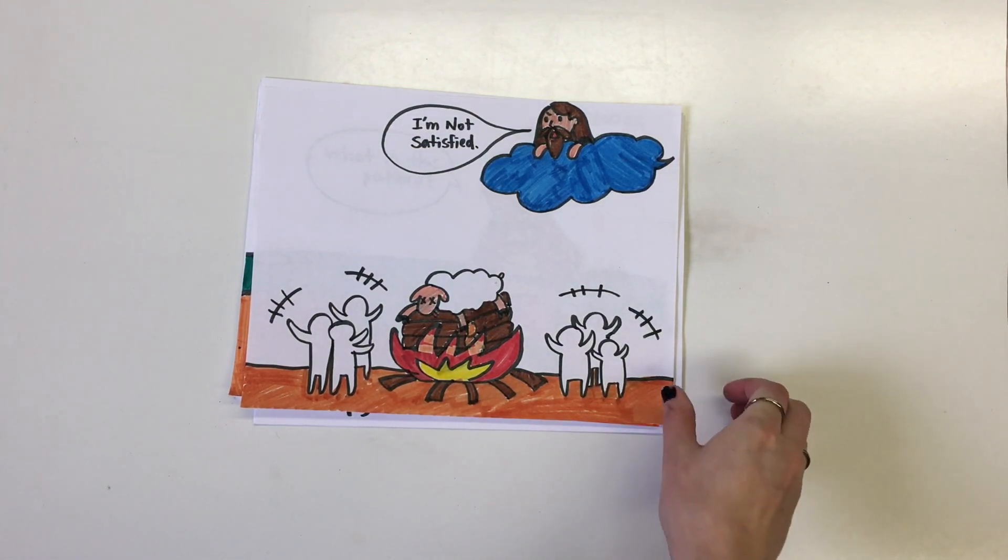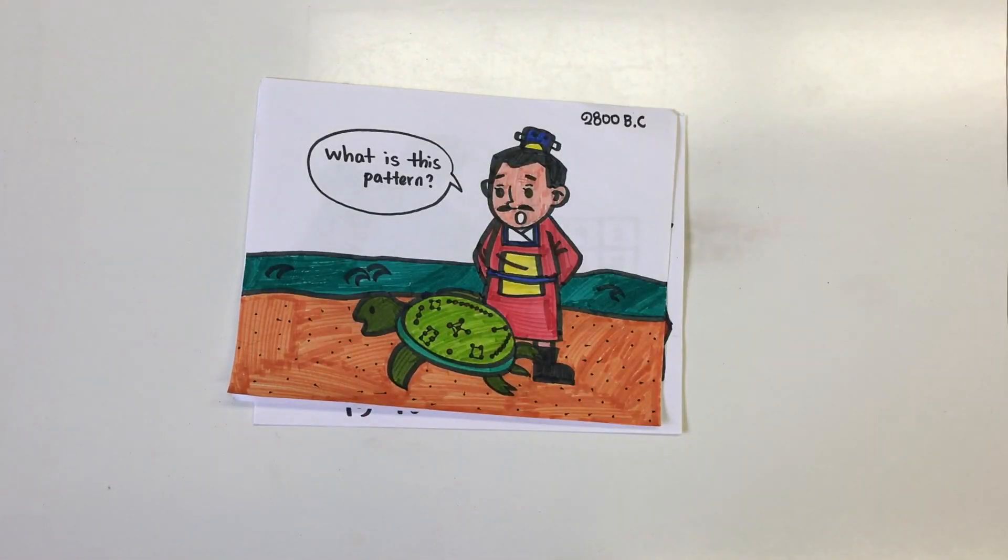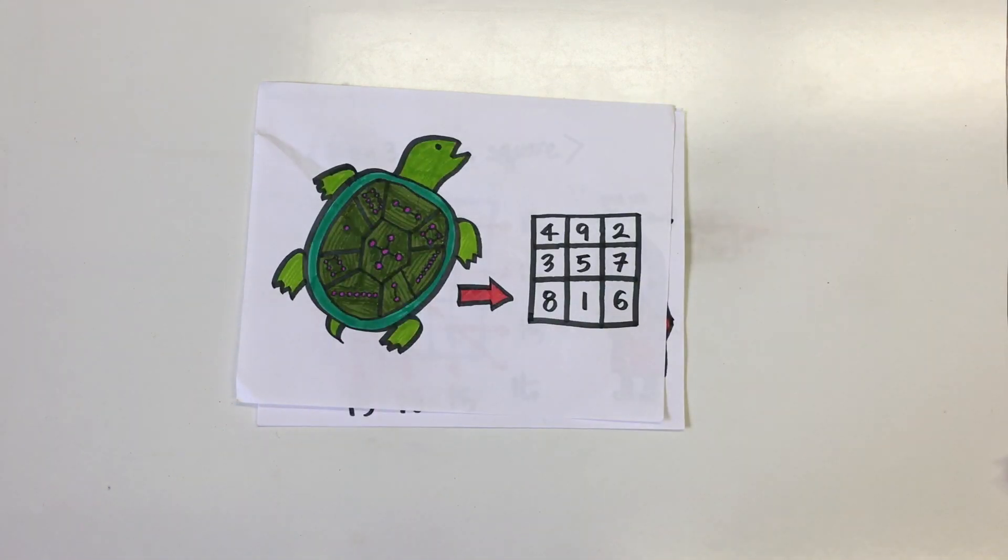A magic turtle emerged from the water, and a boy noticed a pattern on the back of the turtle. Circular dots representing the integers 1 to 9 in a 3 by 3 grid. We now call that square the Loshu square.